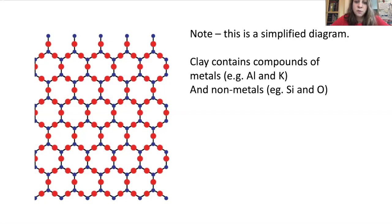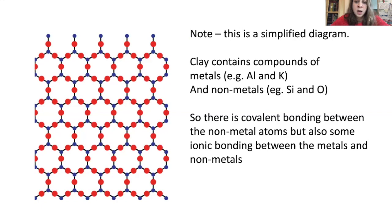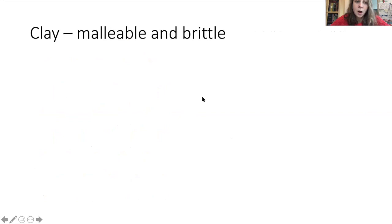Note, this is a simplified diagram. Clay actually contains lots of different things - compounds of metals, things with aluminium and potassium, and non-metals, your silicon and your oxygen. So there is covalent bonding between the non-metal atoms, but there's also some ionic bonding going on between the metals and the non-metals. But this diagram is sufficient for GCSE.